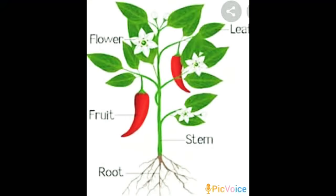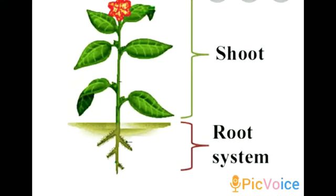We know plants are of different types, but most of the plants have these main parts. The main parts of the plant are root, stem, branches, leaves, flowers, and fruits. The part of the plant that grows below the ground is called root, and the part that grows above the ground is called shoot. So a plant has two parts: root and shoot.